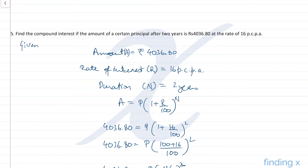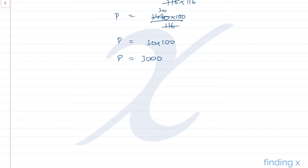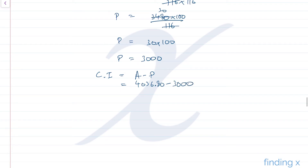Now we find the compound interest: CI = A − P = ₹4,036.80 − ₹3,000 = ₹1,036.80. This is the compound interest earned.